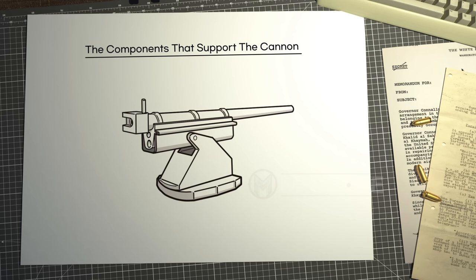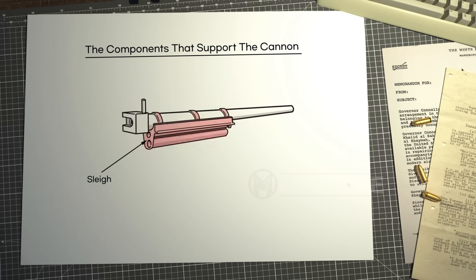The components that support the cannon are the sleigh, the top carriage, and the bottom carriage. The sleigh provides direct support to the cannon, and the recoil mechanism is included inside. The cradle holds up the sleigh, working as a rail for the cannon and the recoil mechanism to move around.